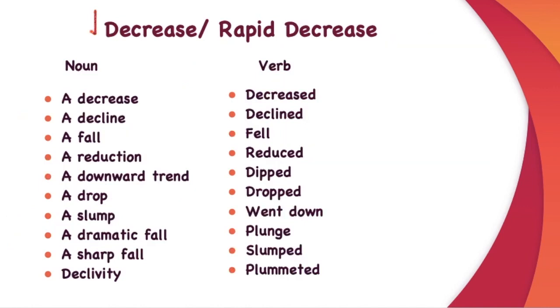Now when it comes to decrease, what kind of verbs and nouns you can use are listed over here. Nouns are a decrease, a decline, a fall, a reduction, a downward trend, a drop, a slump, a dramatic fall, a sharp fall, declivity. And similarly, we have verbs, which are decreased, declined, fell, reduced, dipped, dropped, went down, plunged, slumped, plummeted.